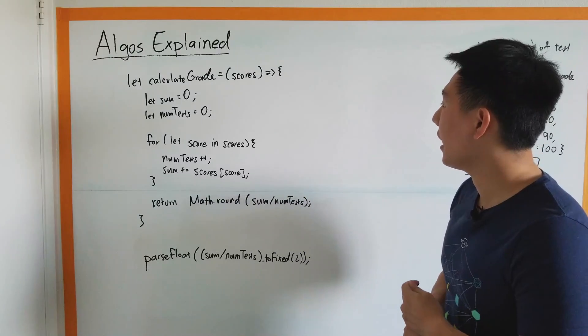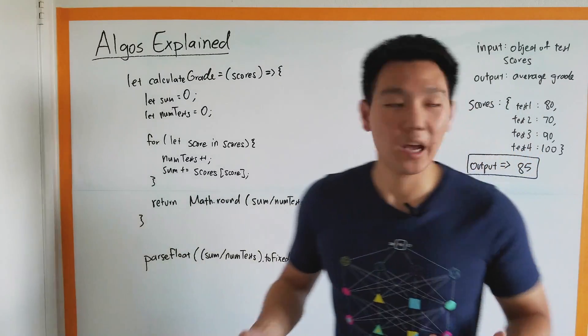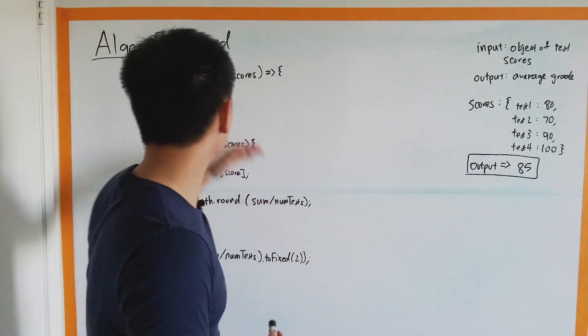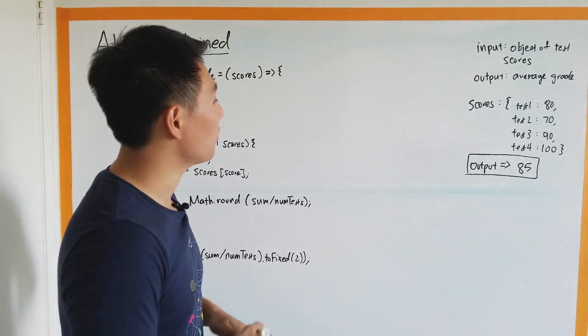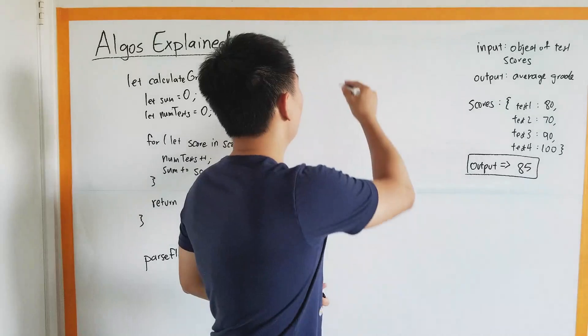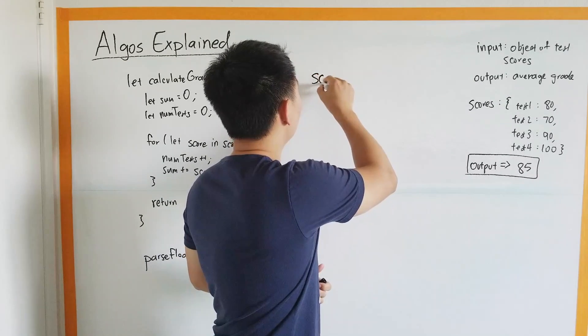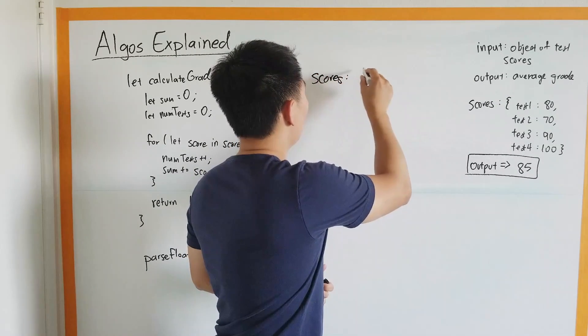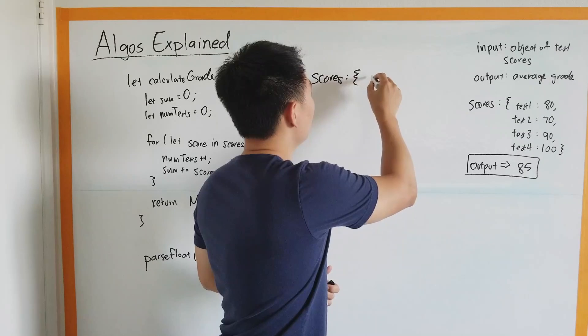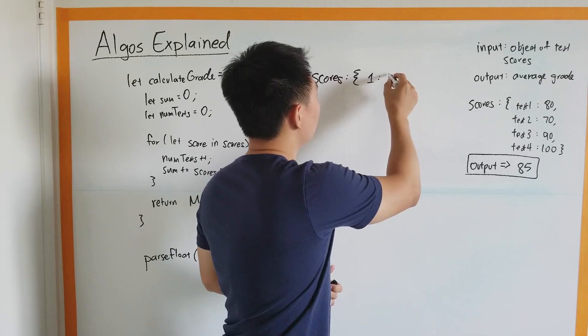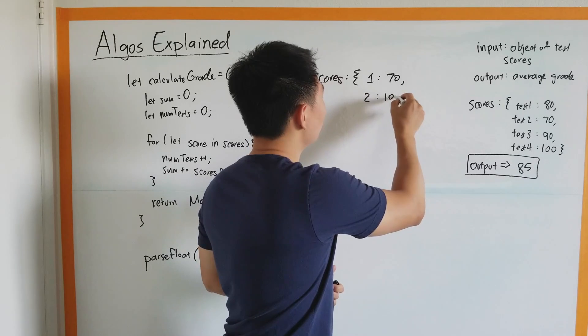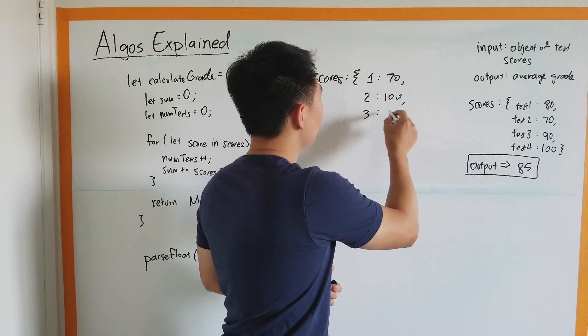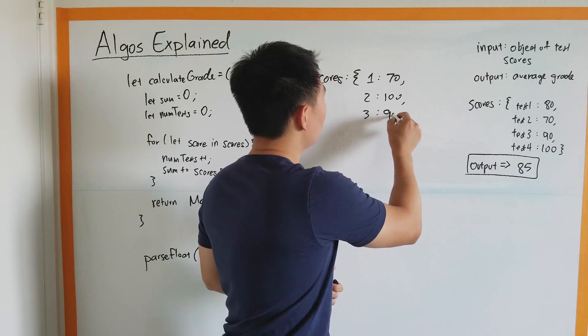Next step would be, say you solve this question, go over it with an example. Create an example yourself. That's what we're going to do. We're going to call our scores, and we're going to do like 70, 2, we're going to do 100, we're going to do 3, 90.